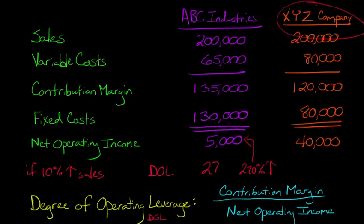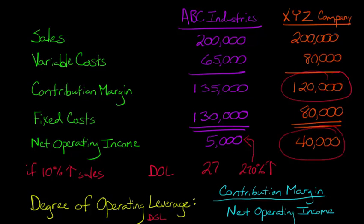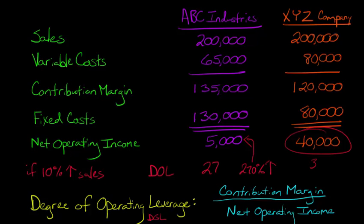Now XYZ company is going to be different. We've got the contribution margin divided by net operating income, so that's $120,000 divided by $40,000. That's going to give us a DOL — a Degree of Operating Leverage — of three. 120,000 divided by 40,000 is three. And again, we're assuming that there's a 10% increase in sales.